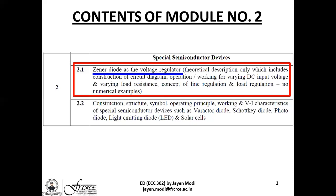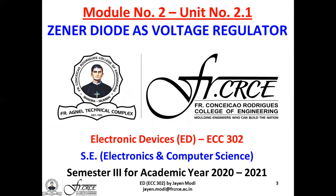The syllabus clearly mentions that you need to only study the theoretical description, which includes the circuit diagram, the operation and working for varying DC input voltage and varying load, along with the concepts of line and load regulation. There are no numerical examples expected. The two main things to study are: first, the Zener diode itself, and second, the Zener diode application as a voltage regulator.